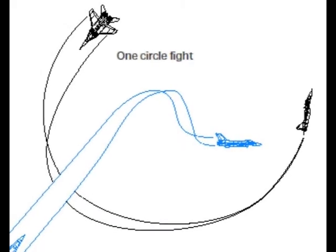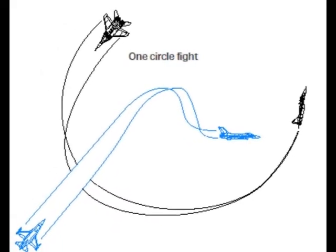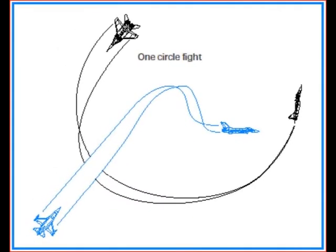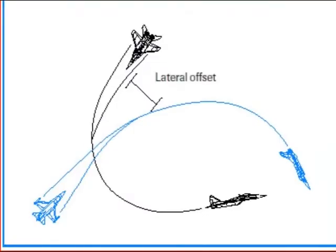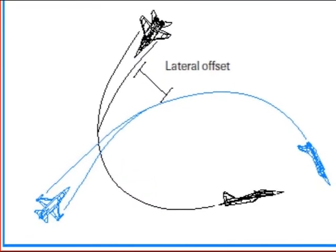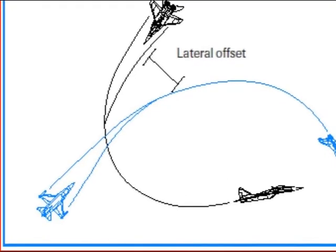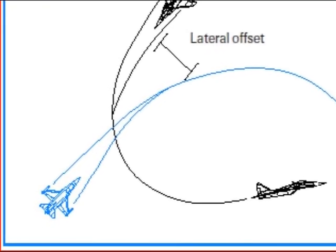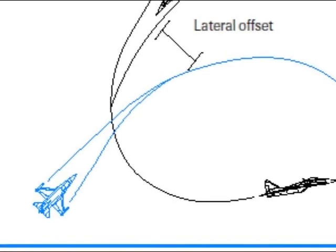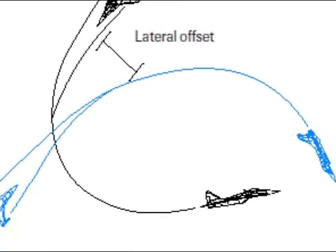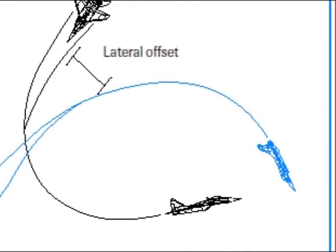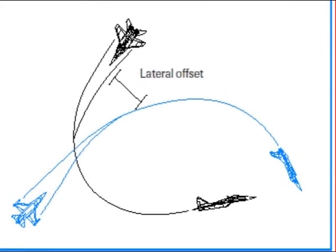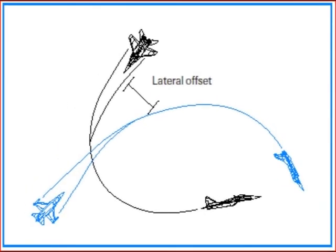Then the fight goes into one-circle and you will end up at his 6 o'clock. If you are offset from the bandit and turn away, you are not using the turning room available and worse yet, you are letting the bandit use it. This graphic illustrates why turning away from the bandit will cause you big problems.